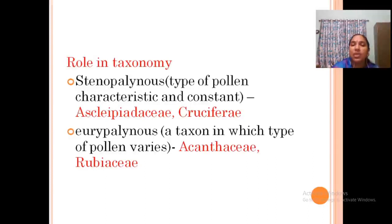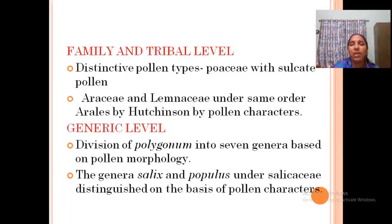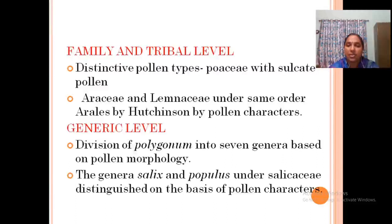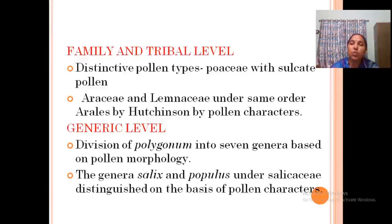At the family level, one example is Poaceae with sulcate pollen; Araceae and Lemnaceae are also characterized by pollen characters and placed in the same order. At the generic level, Polygonum has seven genera differentiated by pollen morphology, and Salix and Populus under Salicaceae are also distinguished on the basis of pollen characters.